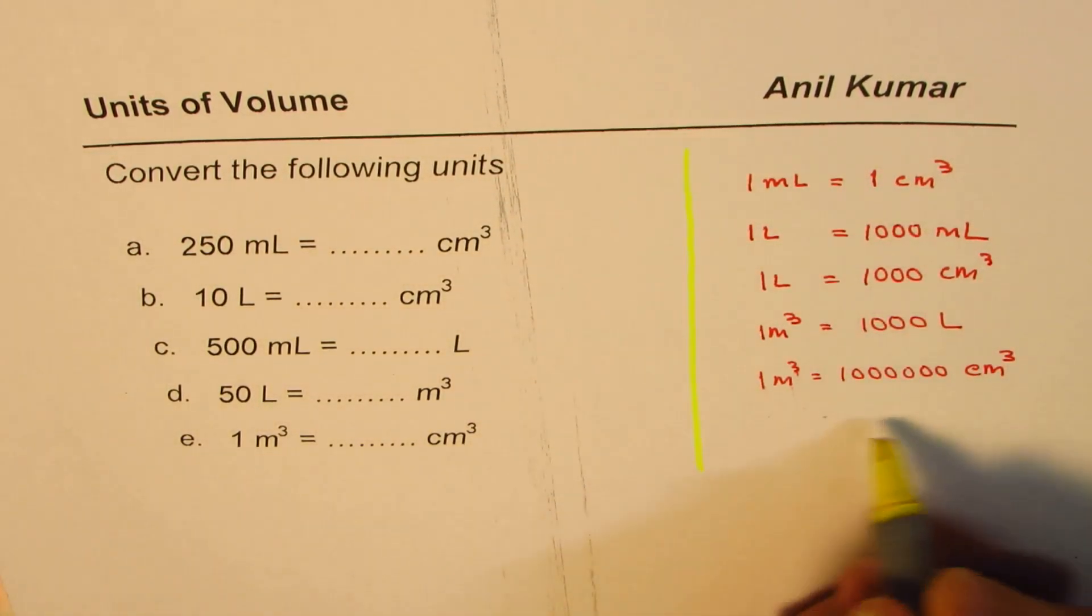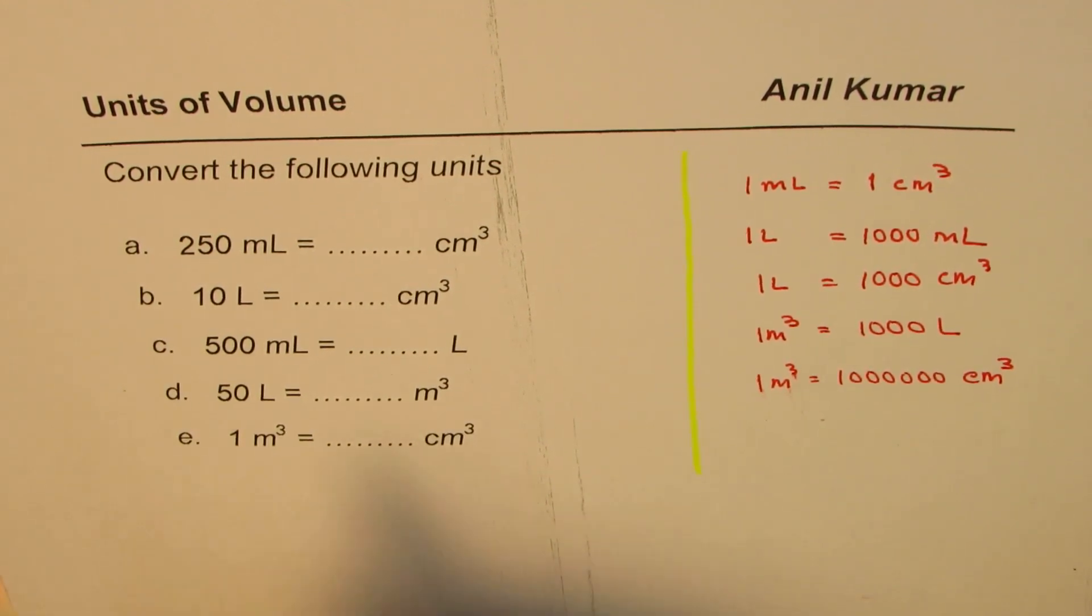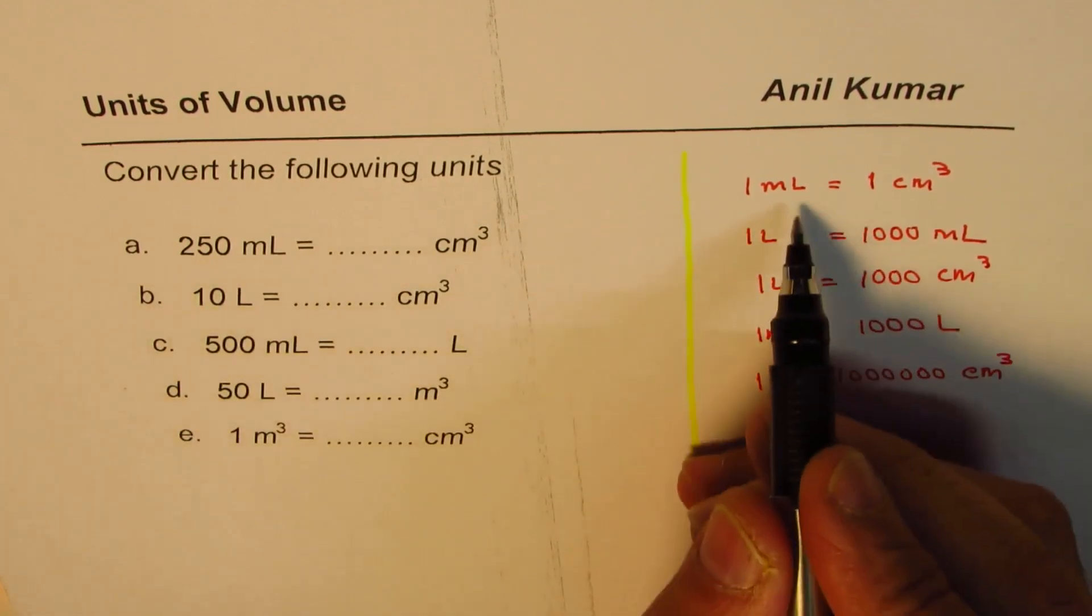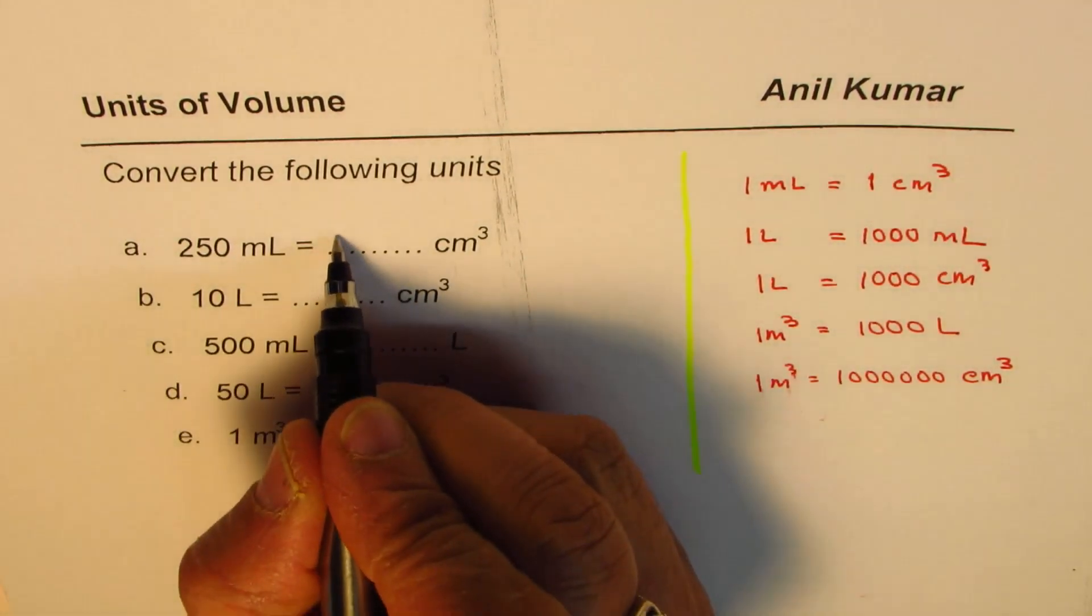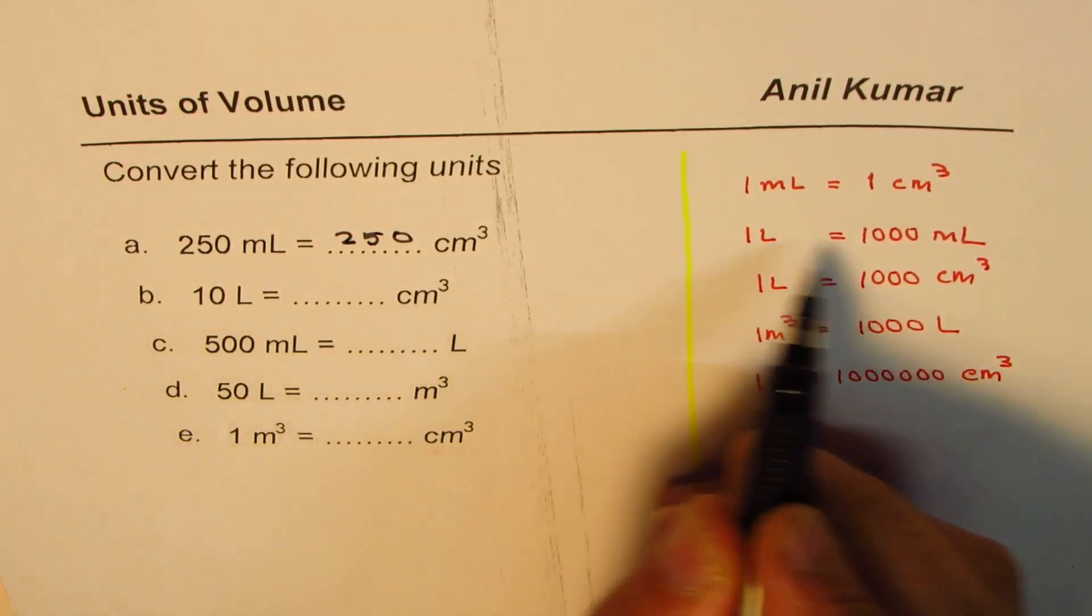Now you can use this set of relations and answer the question. I hope that helps. Here are the answers: 250 milliliters, since milliliters is the same as centimeter cubed, I'll write exactly the same number. 10 liters, now one liter is 1000 centimeter cubed.